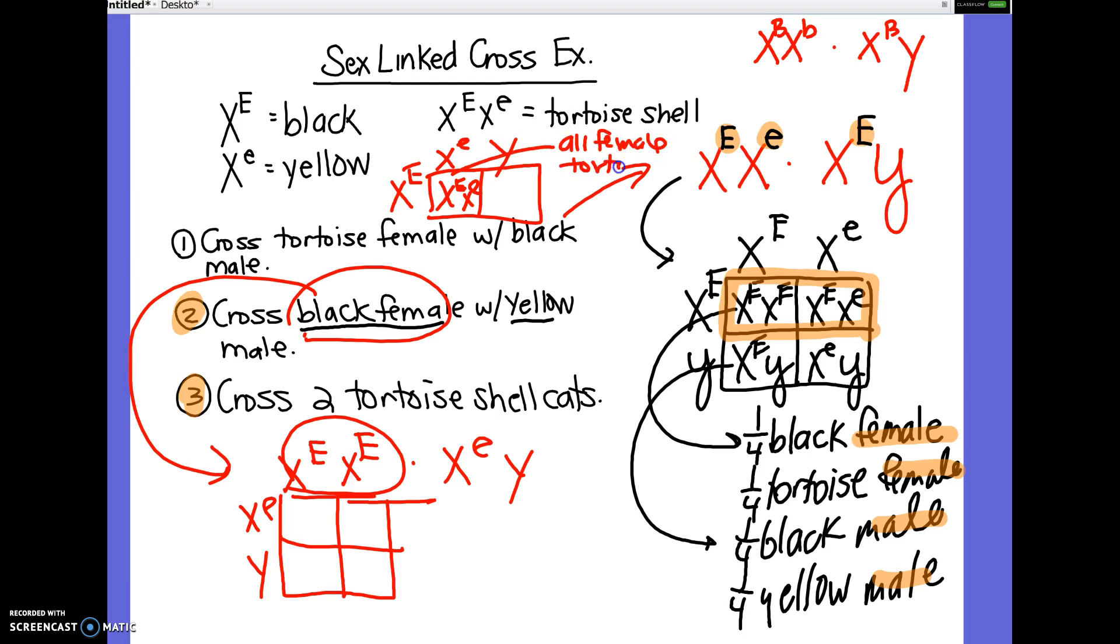So X big E, X little e, all the females are going to be tortoiseshell. And then all the males are going to be X big E, Y, which is black. So all your males will be black. How many people got that right? Awesome.